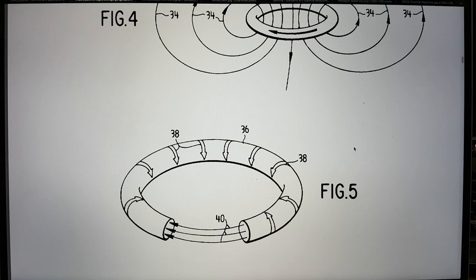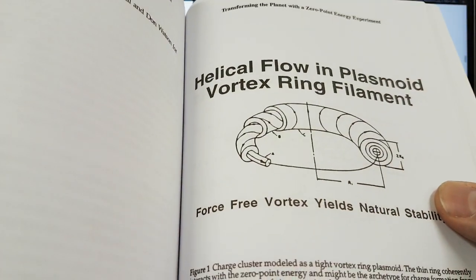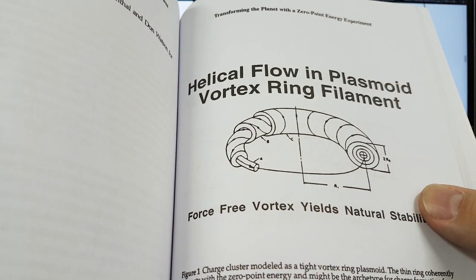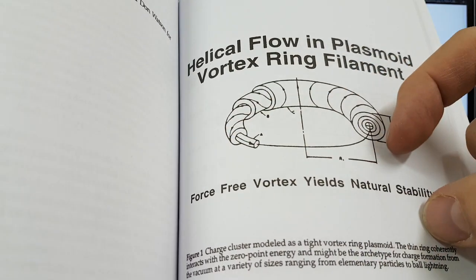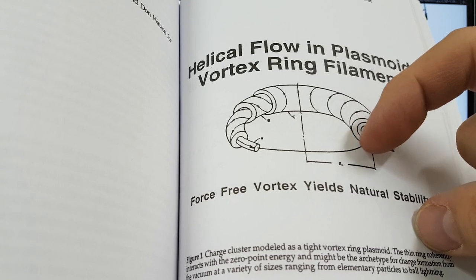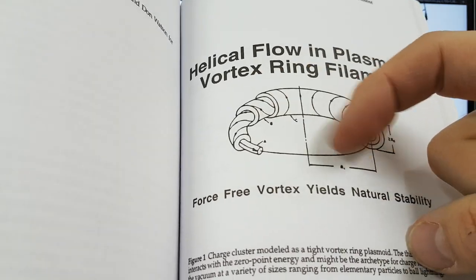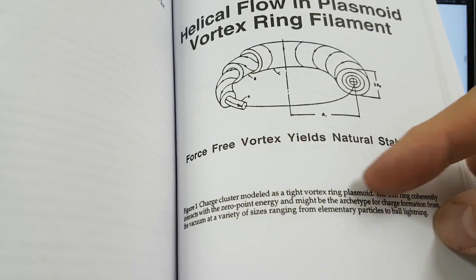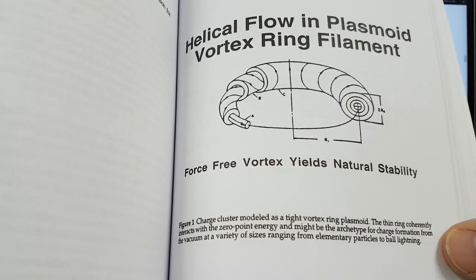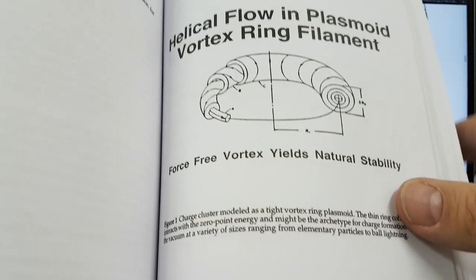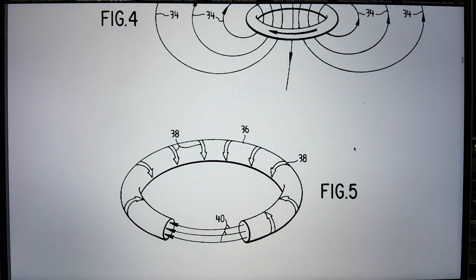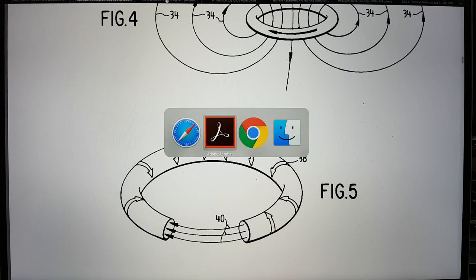So here we have a number of people coming from a vast amount of research that are coming up with the same basic structure. I mean they have a way that they're saying that theirs is being constructed, but others are saying that this is the active structure. And I will find it here in the middle, okay, in a minute. So here is the helical flow in plasmoid vortex ring filament. So you've got the toroidal procession here and then you've got the poloidal procession here. And this produces a force-free vortex and that produces natural stability. Like I say, I will copy the link to a document that goes into the reason that that makes things stable.